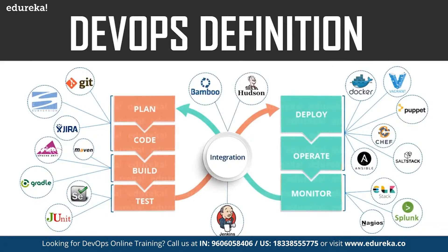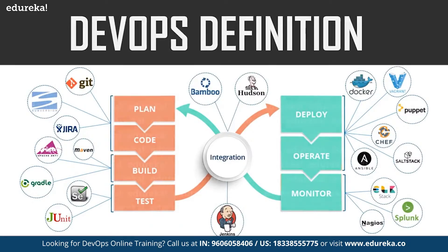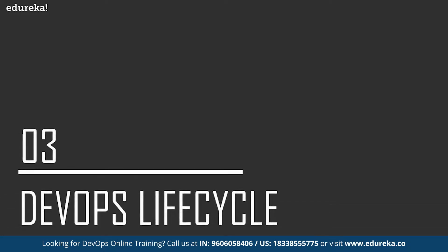DevOps is a software development approach through which superior quality software can be developed quickly and with more reliability. DevOps consists of various stages such as continuous development, continuous testing, continuous integration, continuous deployment, and continuous monitoring. The aim of DevOps is to shorten the systems development lifecycle while delivering features, fixes, and updates frequently in close alignment with business objectives. As you can see in this diagram, these are the various tools used in DevOps.